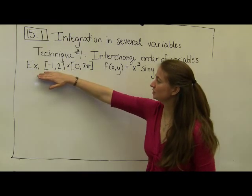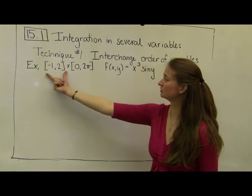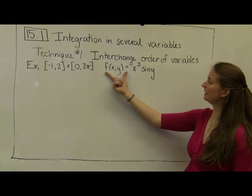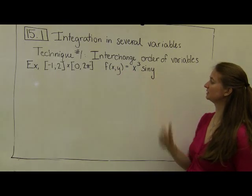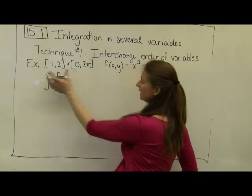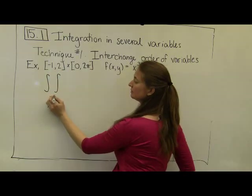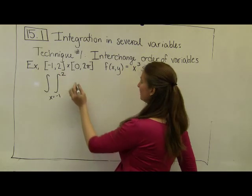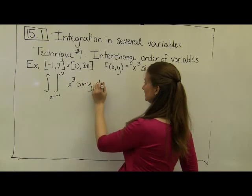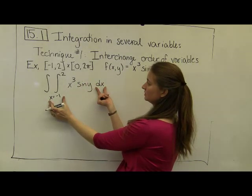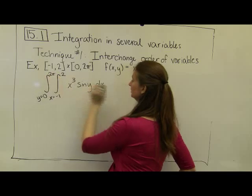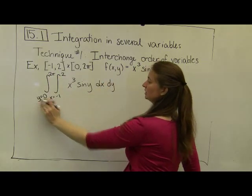Let's say that we have a rectangular region that goes from negative one to two in the x direction and from zero to two pi in the y direction. Our function in this case is f(x, y) = 3x² times the sine of y. To set up this double integral, I'm going to start by having my x values on the interior, so x goes from negative one to two, integrating x³ sin(y) dx. My outer integral is where y goes from zero to two pi, and my outer differential has to match the outer bounds.